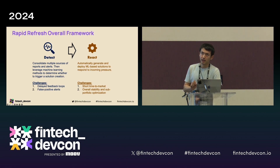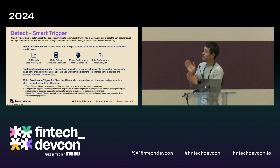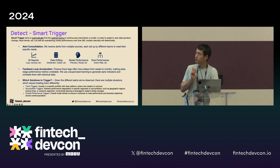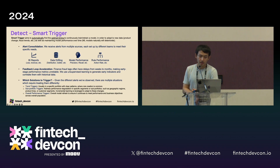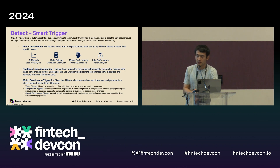Let me give a quick deep dive into our detection framework, called the Smart Trigger. The Smart Trigger aims to automatically find the optimal timing to decide when to train or retrain our machine learning models in order to adapt to new data. The data changes can include product changes, fraud trends, as well as natural model performance deterioration over time — as machine learning models naturally deteriorate the longer they run.